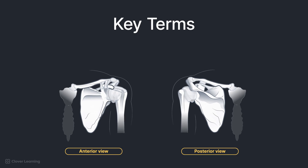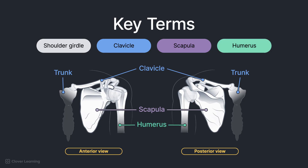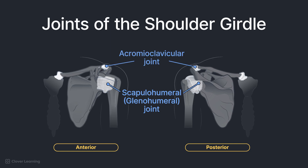There are some key terms we need to know for this lesson. Starting with the bones: the shoulder girdle connects the upper limb to the trunk. The clavicle is the long bone that forms the anterior part of the shoulder girdle. The scapula is the flat bone that forms the posterior part. The joints include the scapulohumeral or glenohumeral articulation — a synovial ball and socket joint between the glenoid cavity of the scapula and head of the humerus — the acromioclavicular articulation, a synovial gliding joint between the acromion of the scapula and acromial extremity of the clavicle, and the sternoclavicular articulation, a synovial double gliding joint between the sternal extremity of the clavicle, the manubrium, and the first rib cartilage.